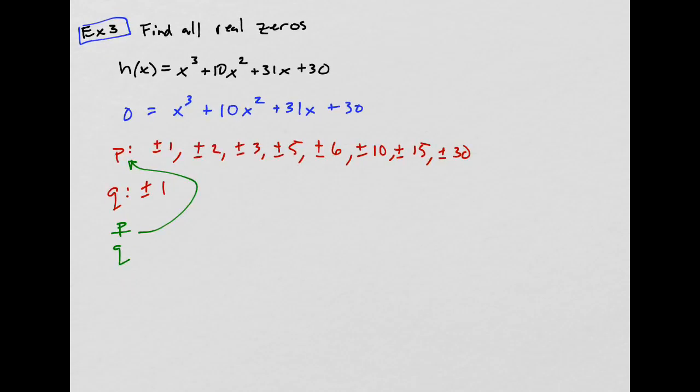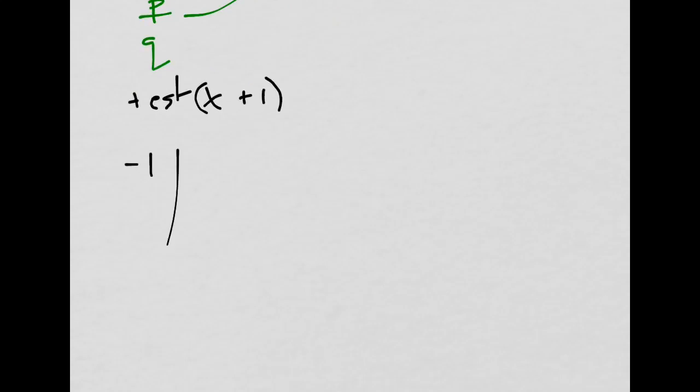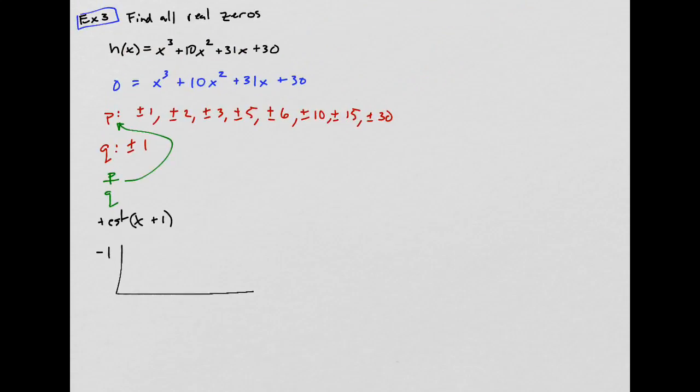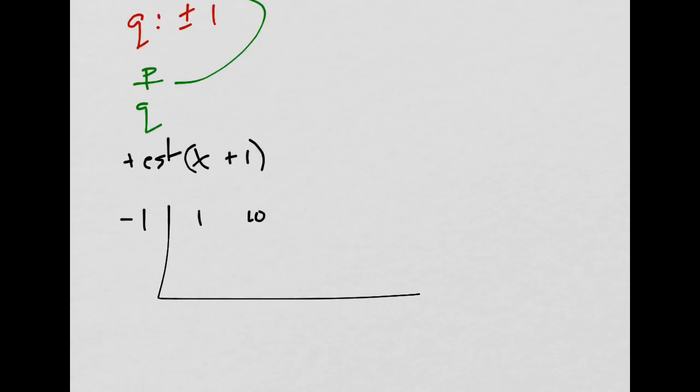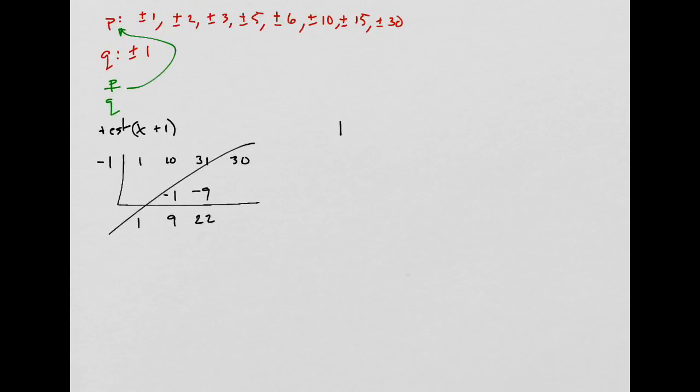So I'm gonna test with x, let's say, plus 1. So test that, and I'm gonna use a negative 1. All the same steps. And here we go: 1, 10, 31, and 30. That's 1, negative 1, that's 9, negative 9, 31 minus 9 is 22. And then I know that's not gonna work.